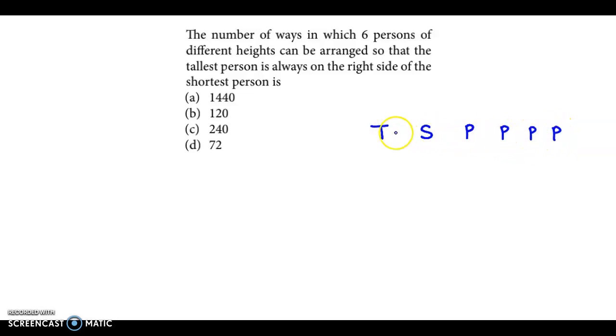So we have the tallest and shortest person and the rest of the 4 people. Now the condition is the tallest person is always on the right side of the shortest person. If this is the shortest person, the tallest person is always on the right side of the shortest.